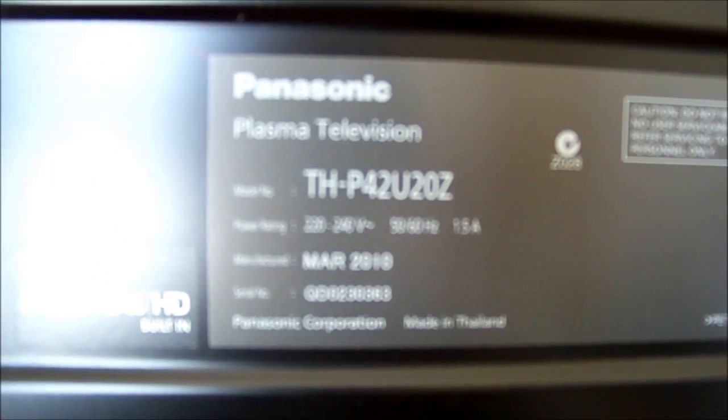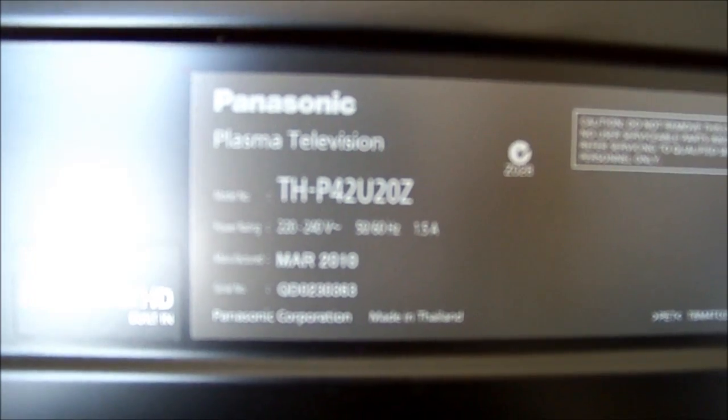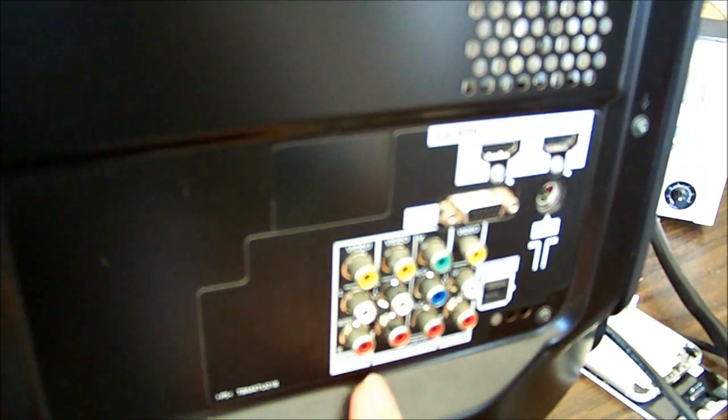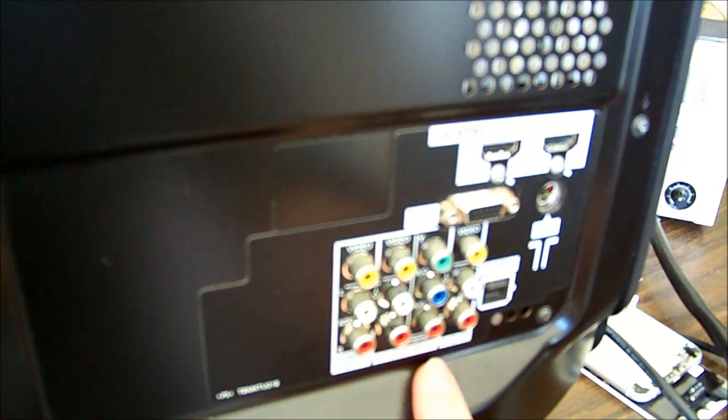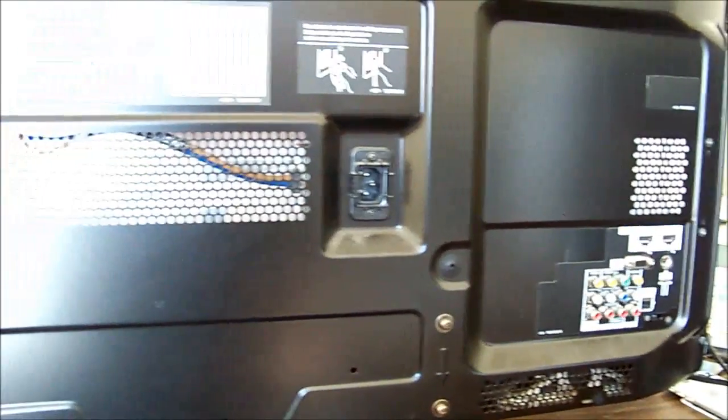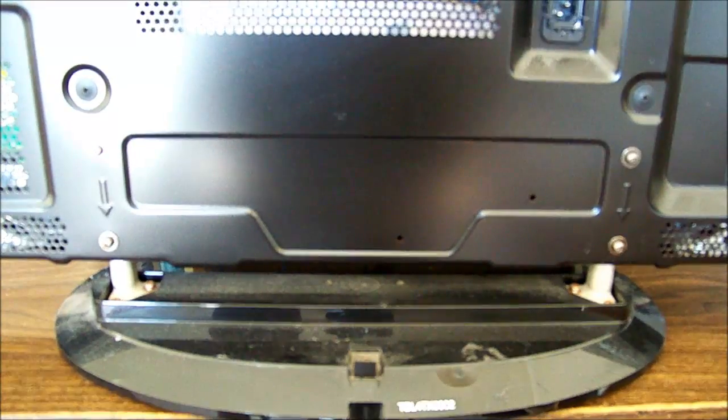So the model is a THP 42U20Z, it has the built-in Freeview digital tuner and has monitor out, AV in, component in and another AV in, and on the side there's another couple of inputs and buttons. So if we're lucky we're going to be able to take the back off while the stand is attached and keep the thing upright, make life a lot easier.